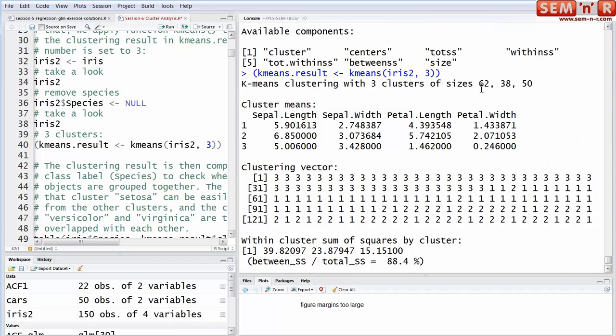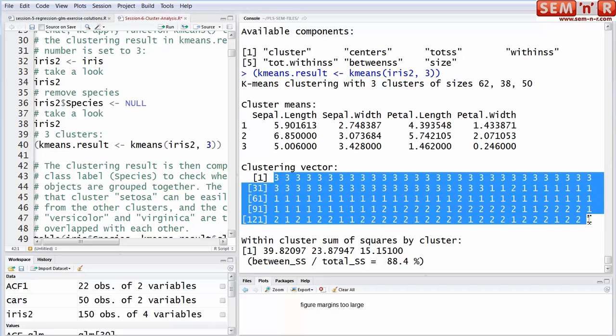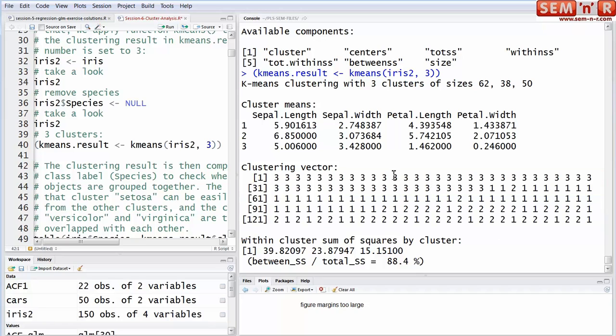What do we see here? It's showing us the group membership. When we say three clusters, it assigns 62 of the rows to one of them, 38 to the other, and 50 to the third. It's giving us the means for each variable, which is not the same thing as the centroid. You're assigning the records to groups, not the individual variables. However, the clustering vector does show us, by row, the assignment to the three clusters.